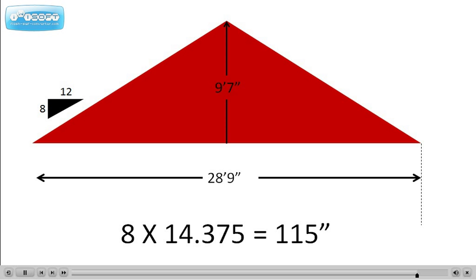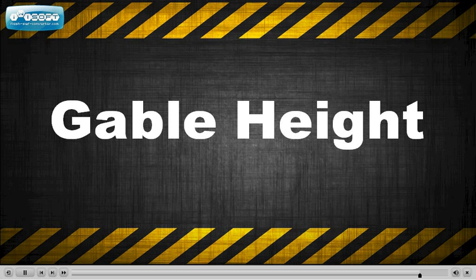If you use our app, this measurement is returned quickly. You simply enter the rise of the roof. And in this case, it would be 8. Then you enter the span. In this case, 28 feet 9 inches. The answer 9 feet 7 inches is returned immediately.